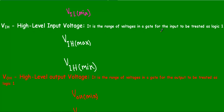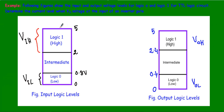VIH is the range of voltages in a gate for the input to be treated as logic 1. Any value of applied voltage within this range will be treated as logic 1, with maximum value VIH max and minimum value VIH min. The range of VIH is found by subtracting VIH min from VIH max.